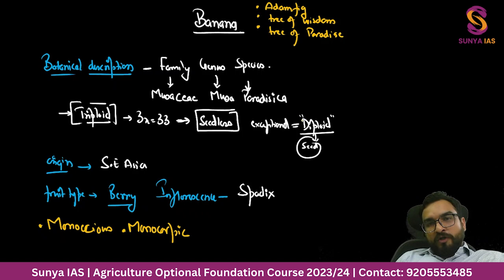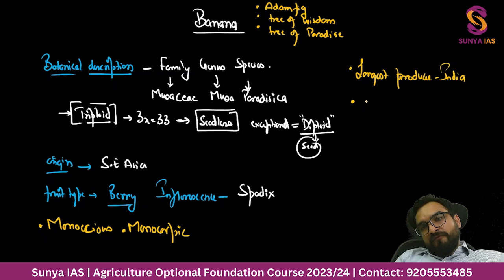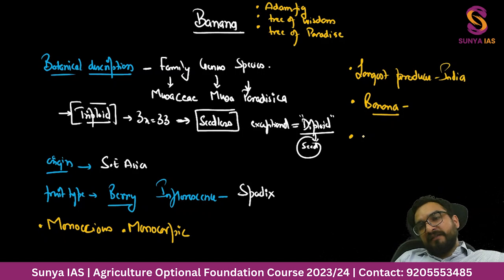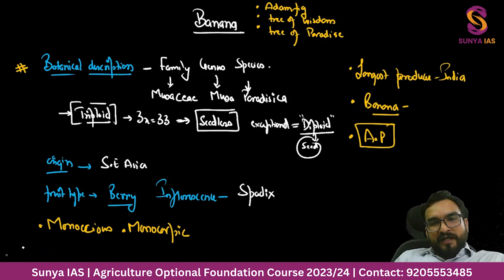The largest producer of banana in the world is India. Among fruits cultivated in the largest quantity in India, banana comes first, then mango. The state producing the maximum production of bananas is Andhra Pradesh.